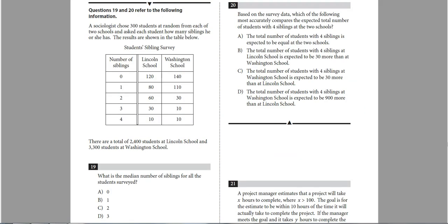All right, number 19 and 20 is one of these extended story problems. So they give you some data and then we have to answer a couple questions on it. So it says the sociologist chose 300 students at random. So this is kind of my total here, from each of the two schools and asks each student how many siblings he or she has. So it looks like at Lincoln High School they chose 300 and at Washington High School they chose 300. So a number of siblings. So at Lincoln, how you read the chart is there were 120 kids at Lincoln that had no siblings. They were an only child and 140 at Washington that had an only child.